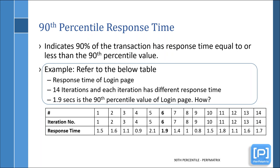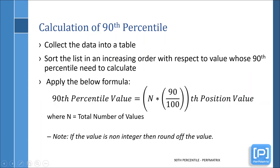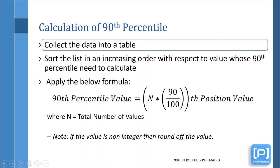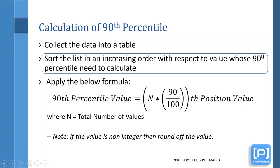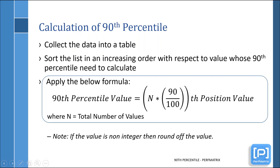To understand how the tool calculates it, we need to understand the calculation. There are 3 steps involved in calculating the 90th percentile. The first step is to collect the data and arrange it into a table. The second step is to sort the data in increasing order with respect to the value whose 90th percentile needs to be calculated. As a third step, apply the percentile formula shown here: the 90th percentile value in a sorted list is equal to the nth position, calculated by multiplying 0.9 with the total number of data in the list.